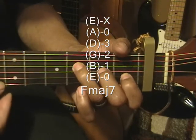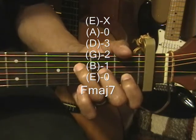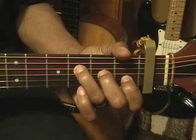And the high E is left open. We're strumming from the A string. F major 7. That's F major 7.